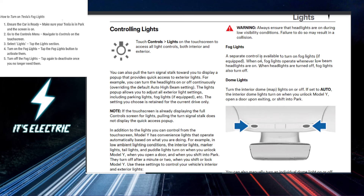Now that the screen is on, you want to navigate to the controls menu on the touch screen. This is where you'll access all your vehicle settings, including the lights.